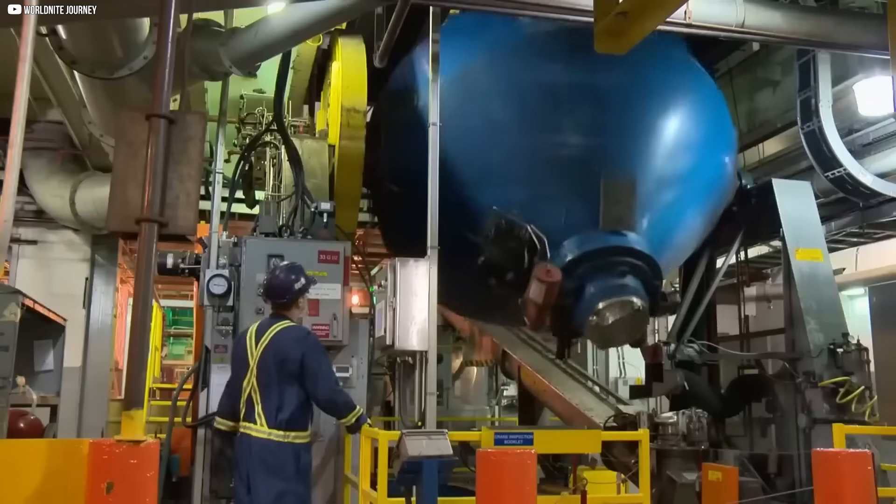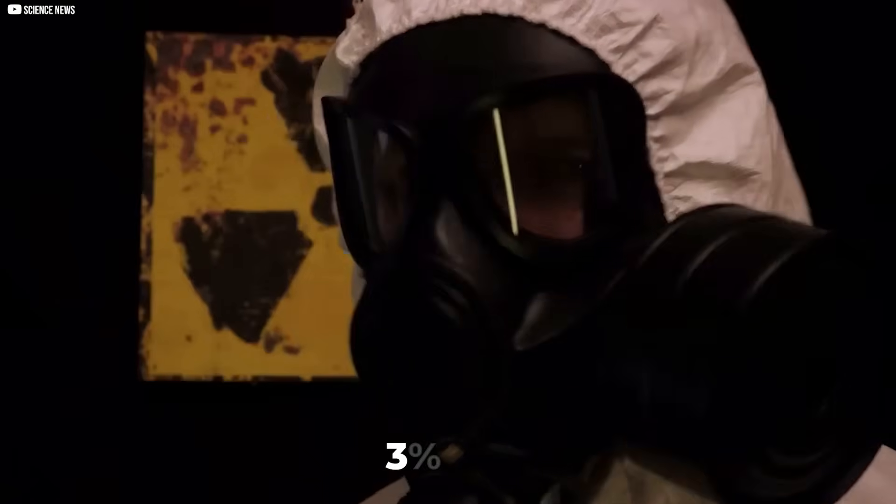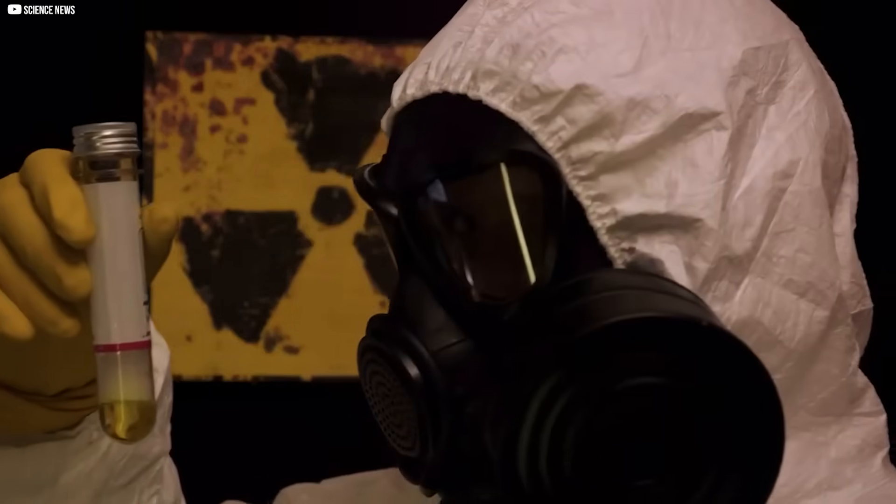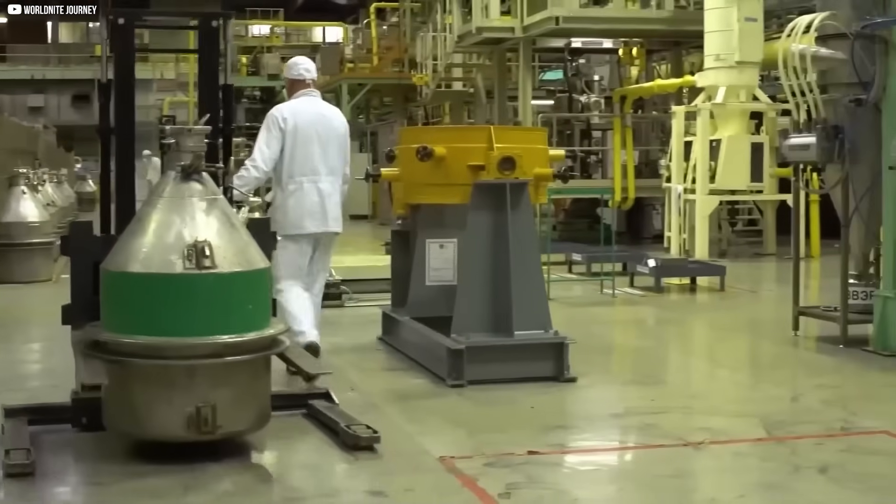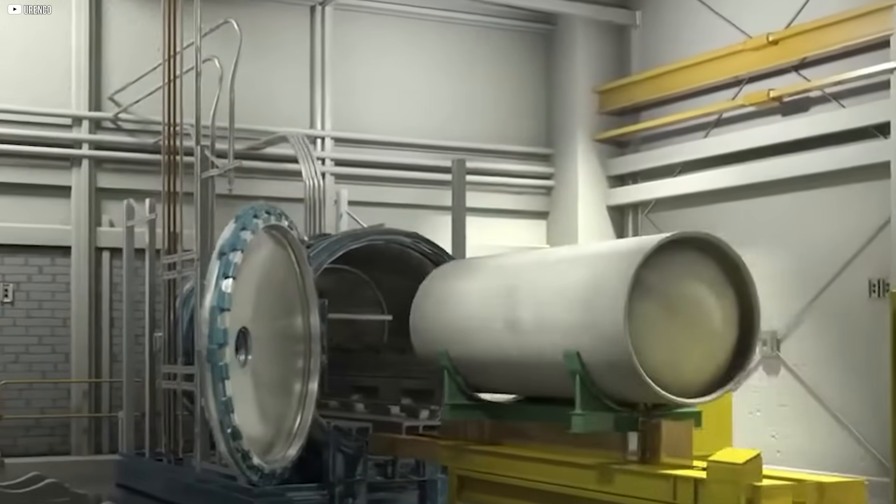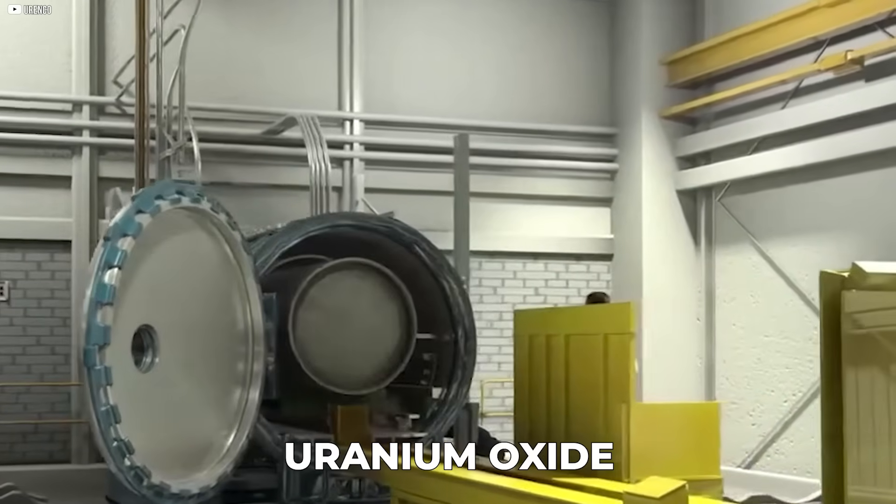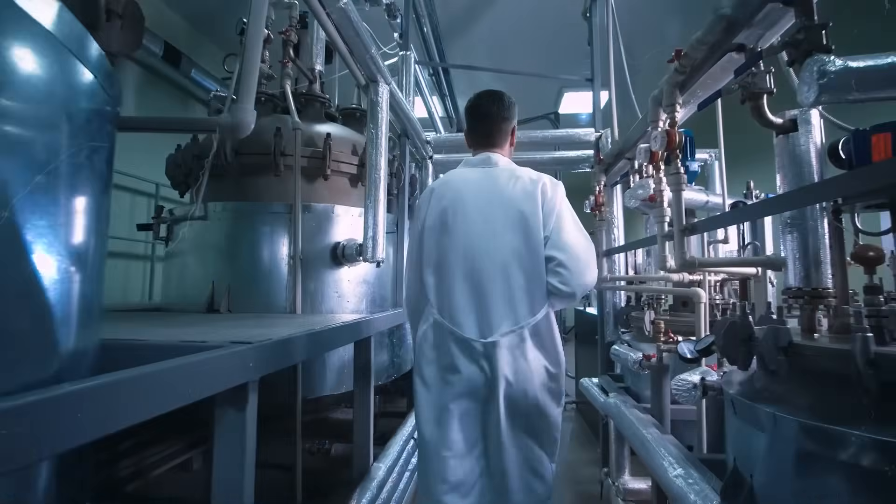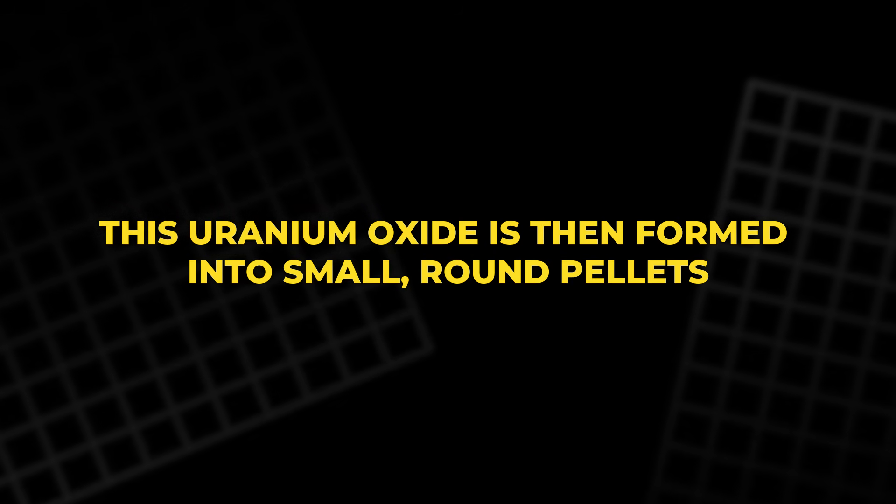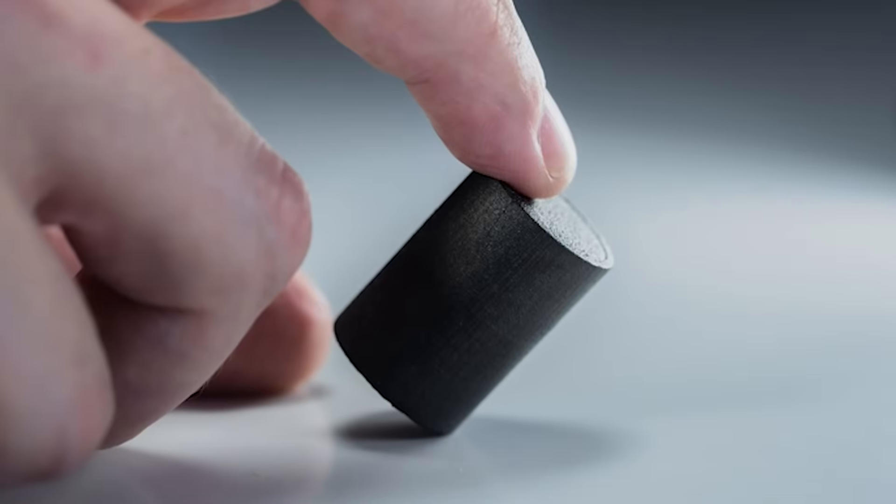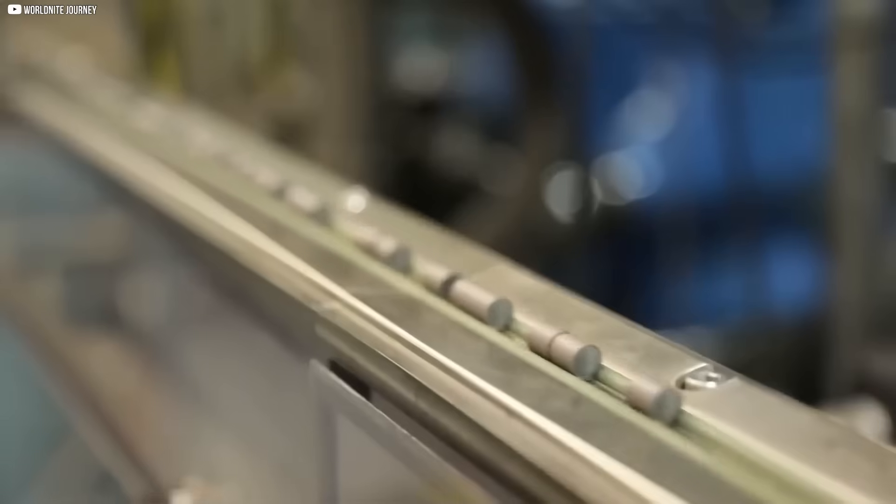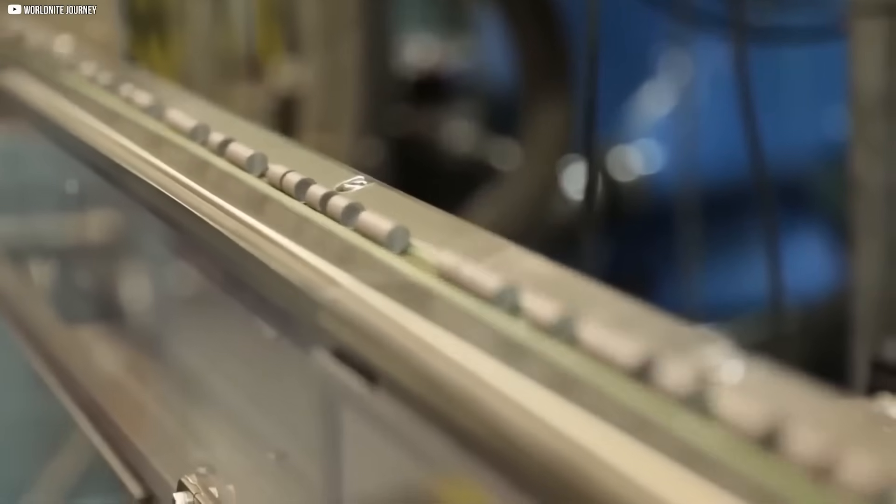After uranium has been enriched to the desired level, typically 3-5% uranium-235 for commercial reactors, it undergoes a critical transformation into usable nuclear fuel. The enriched uranium is first converted back into uranium oxide, a stable solid, through a chemical process. This uranium oxide is then formed into small, round pellets, each roughly the size of a coin, and weighing about 7 grams. These pellets are incredibly energy-dense, capable of producing as much energy as several tons of coal.